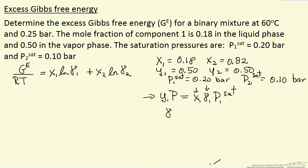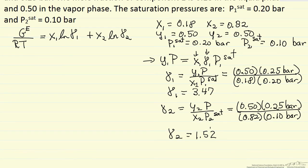And so we can solve for gamma one because we have all the other values. So gamma one in terms of x one, p one sat, so I'm going to substitute the numbers in. Now of course we're going to have the same equation for gamma two. So here are the values for gamma one and gamma two.